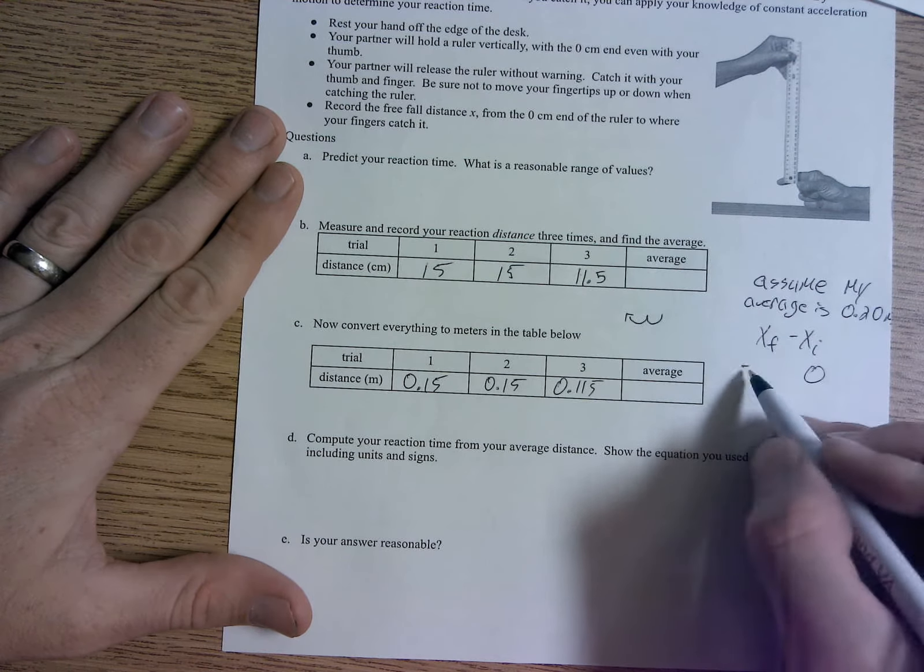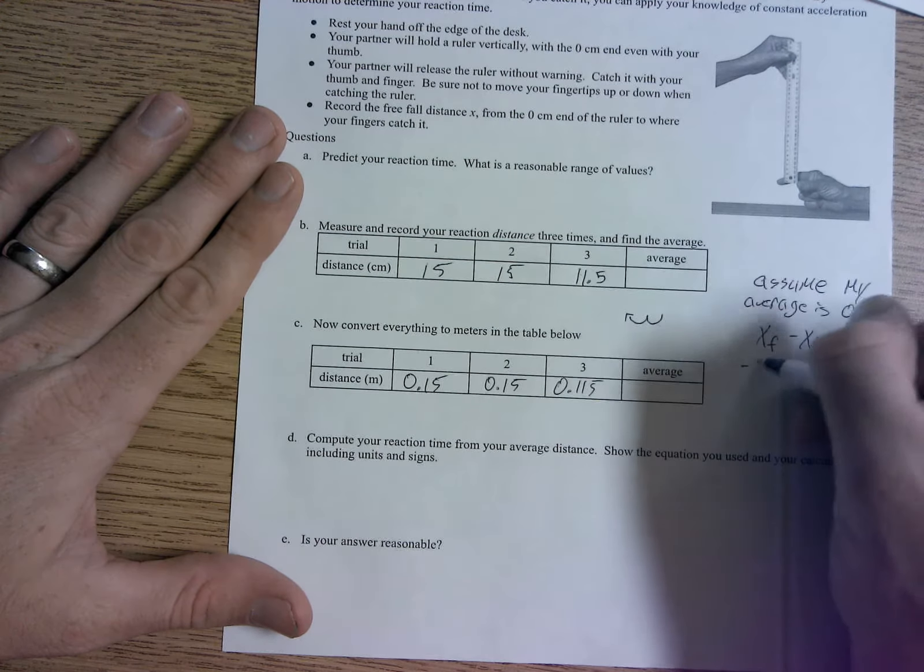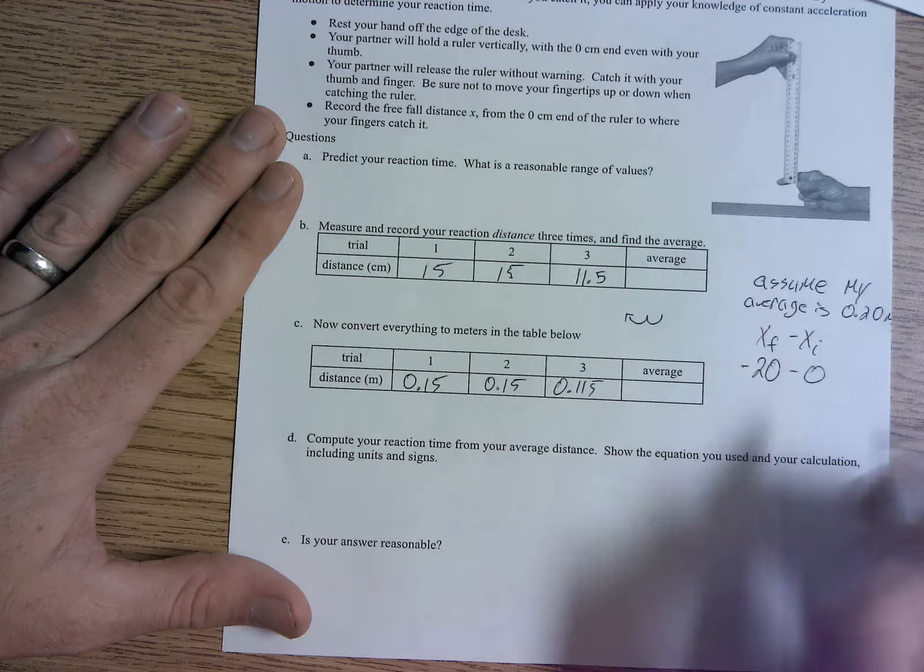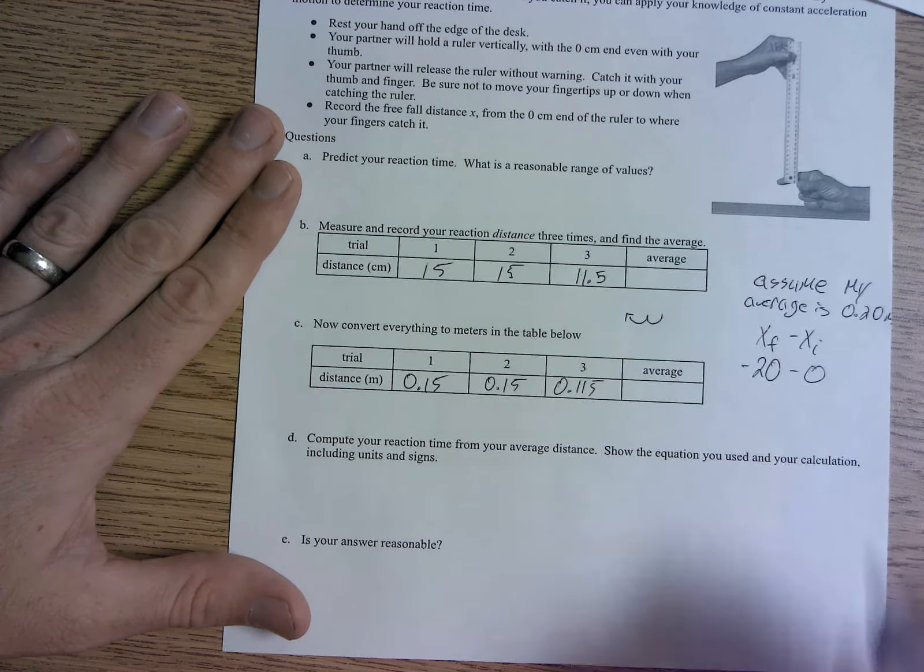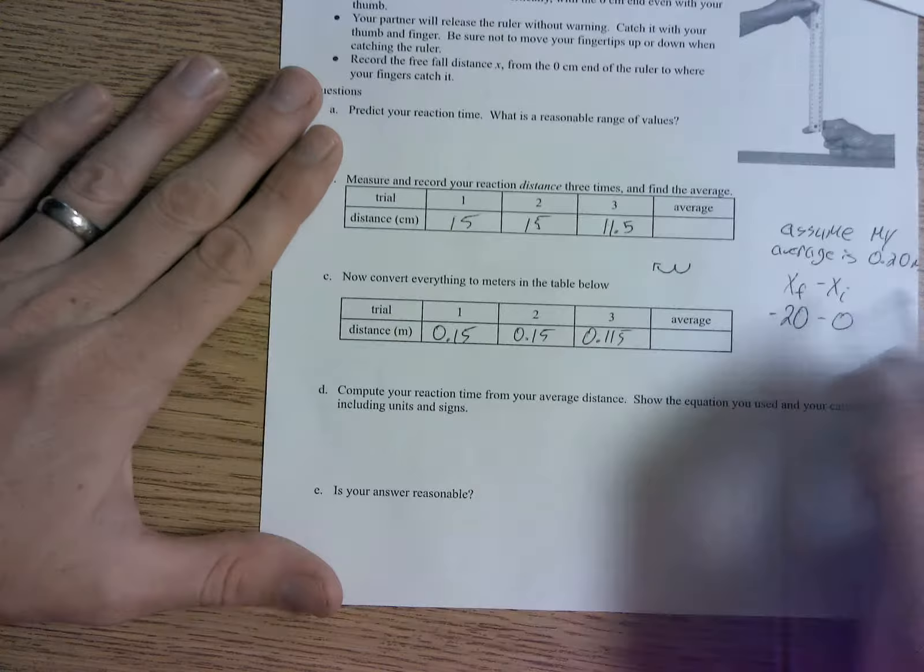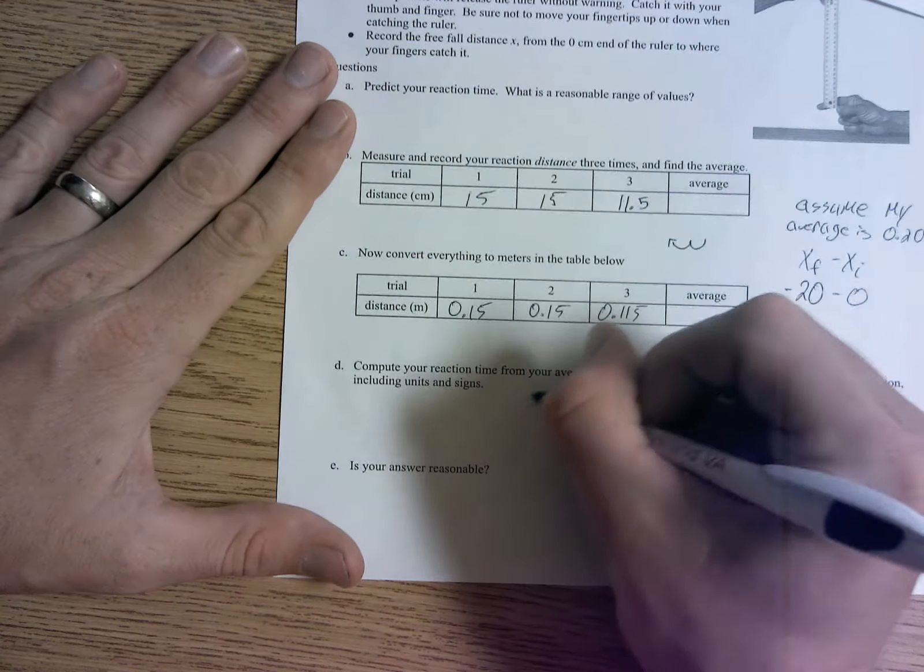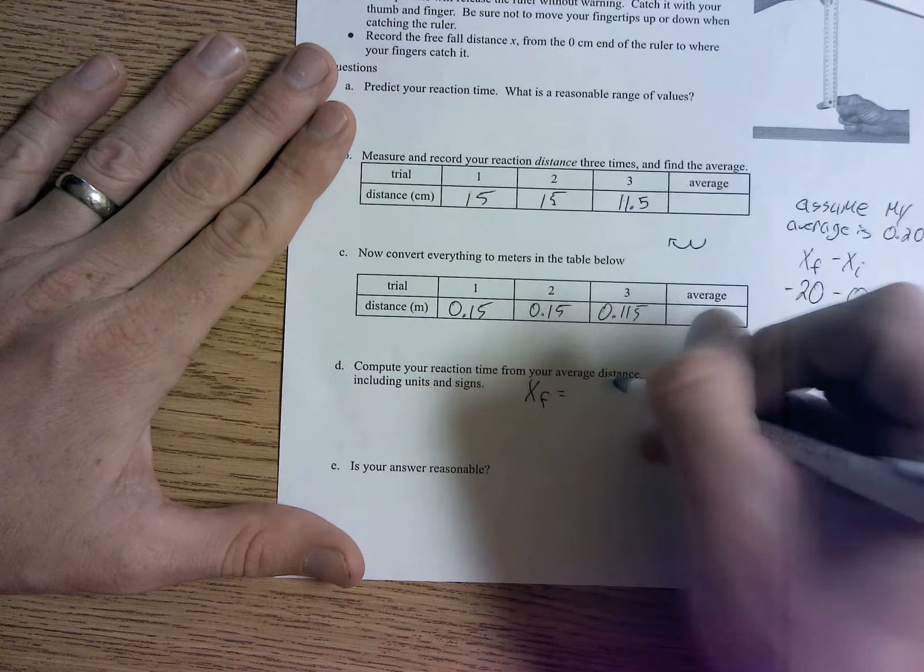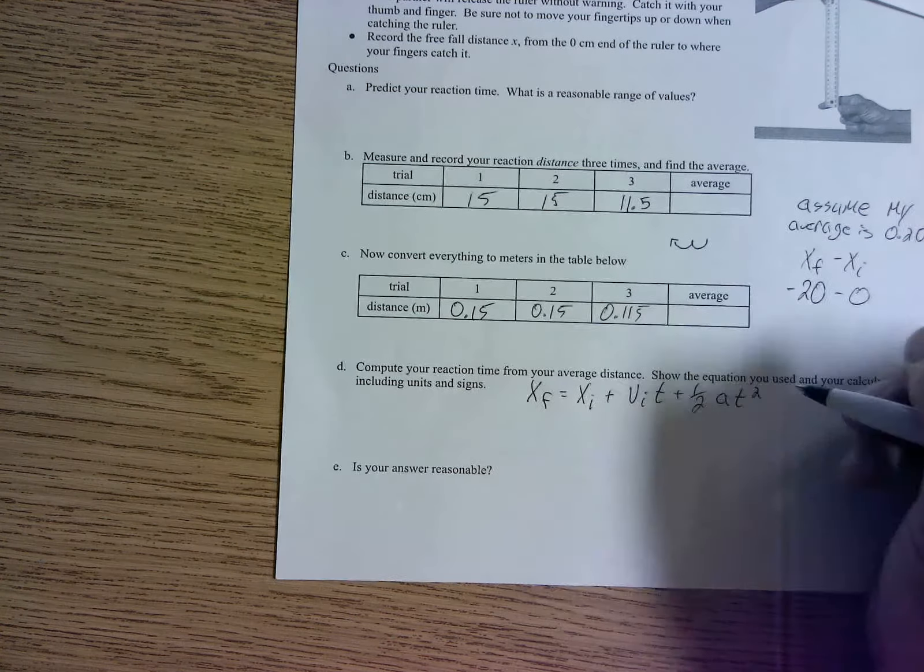So x final, remember, it's negative 0.20 because it dropped down. Negative 0.20 minus 0, that's going to be your xf minus xi. So the only thing that we know is the distance that it traveled. Our formula for that is here.